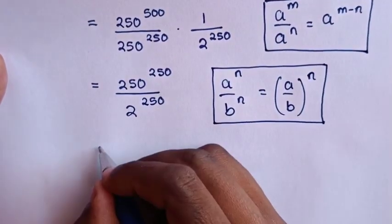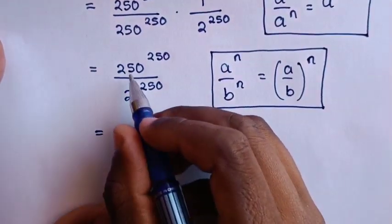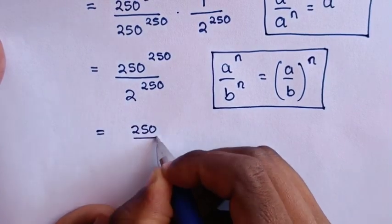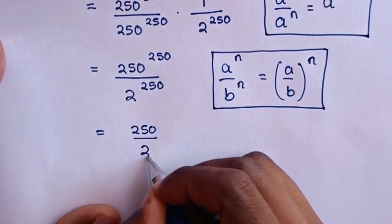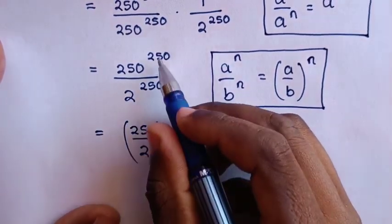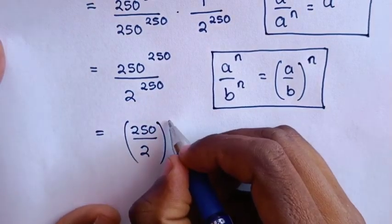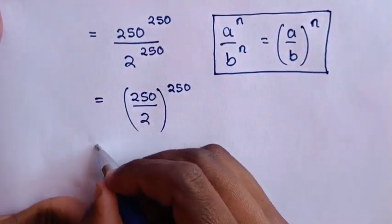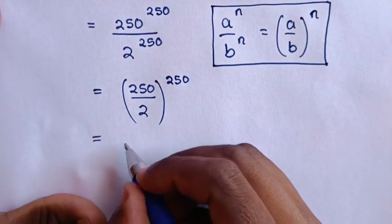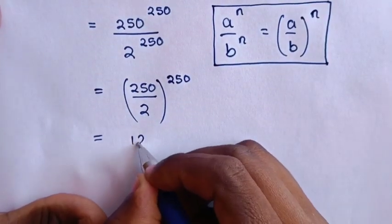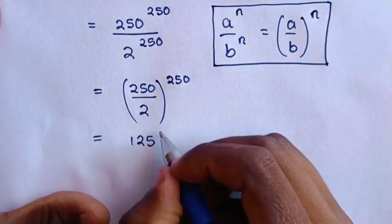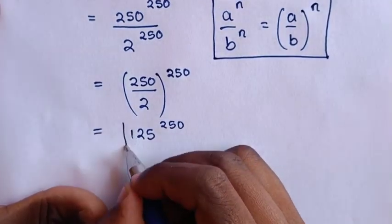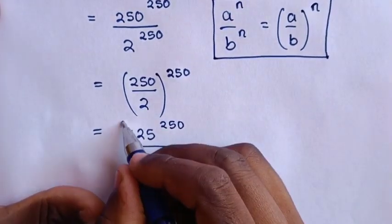This will be equal to base of 250 over base of 2, then bracket common power of 250. So this will be equal to 125 power of 250. So this is our final answer.